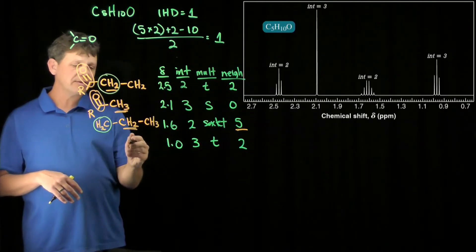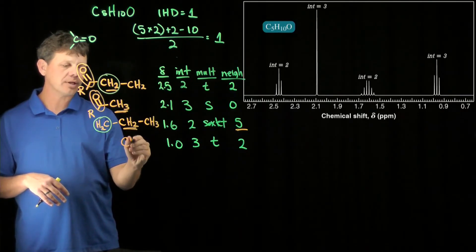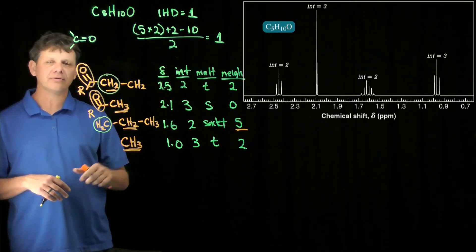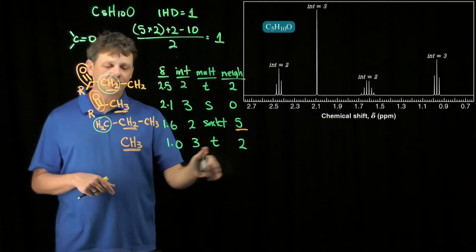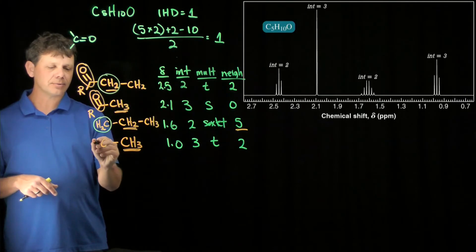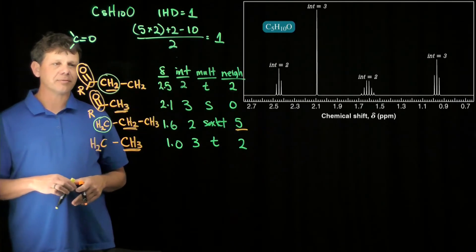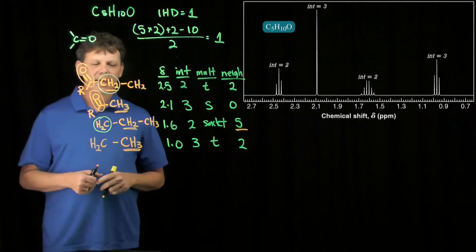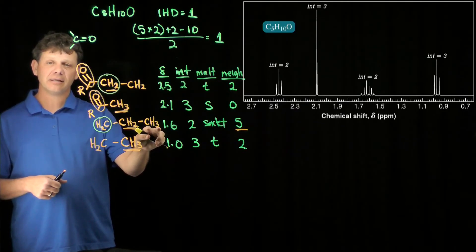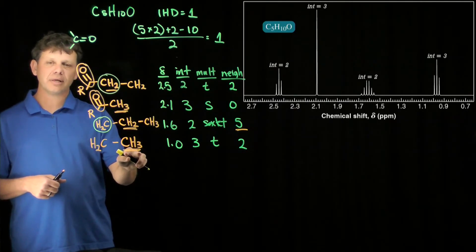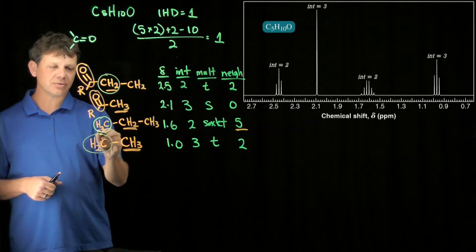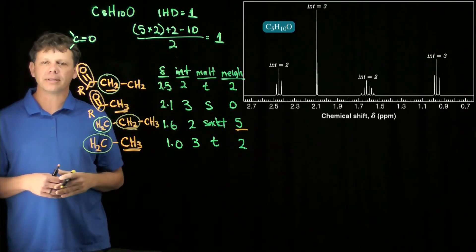At our chemical shift of one, it integrates to three, so we know we have a CH3. It's a triplet, so it has two neighbors. The easiest way to have two neighbors is to be next door to a CH2. We can see that reciprocity playing out once again, because this CH2 we believed was going to be next door to a CH3. And now we found a CH3 that's next door to a CH2. So this CH2 and this CH2 are probably the same.